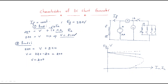We can observe that the terminal voltage drops as load increases — from 210 V with one load to 200 V with two loads. The load current is approximately equal to the armature current because the field current is constant, so both currents are effectively equal.